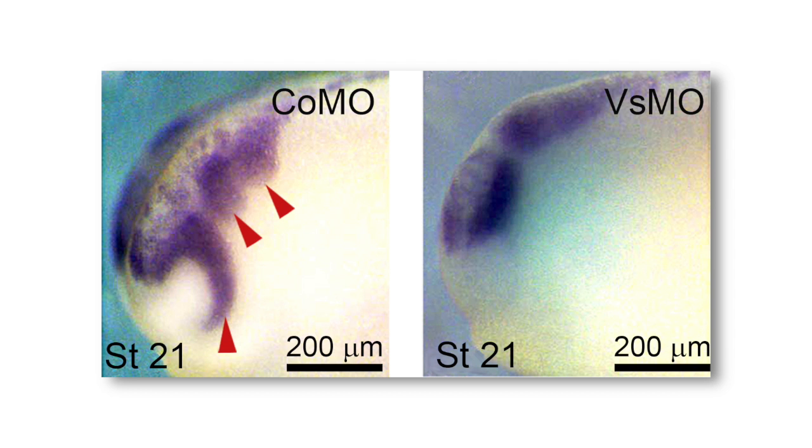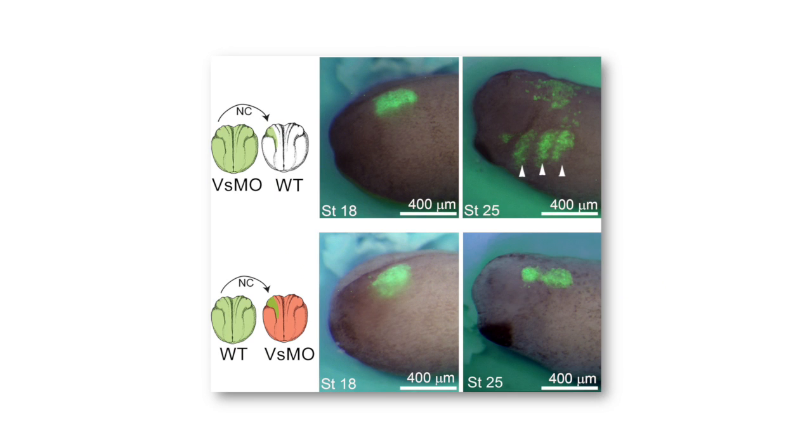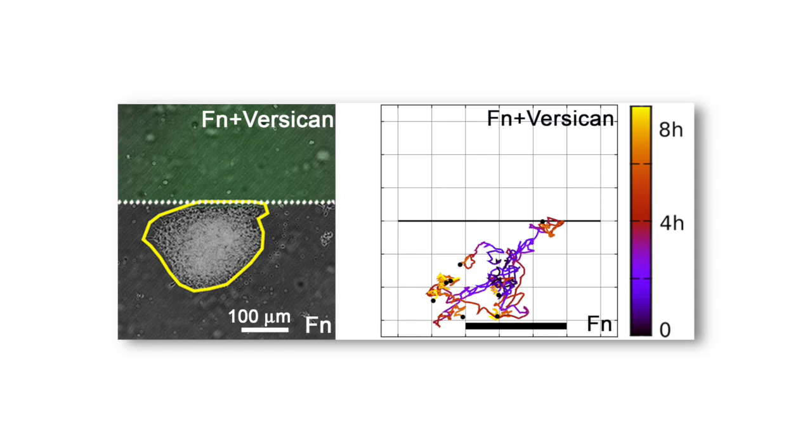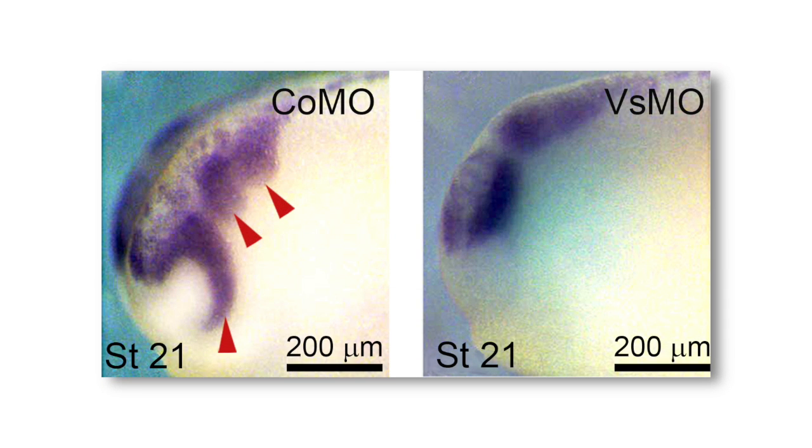Yet knocking down Versican in developing frog embryos impaired neural crest migration. A series of grafting experiments demonstrated that Versican is required in the tissues surrounding the neural crest cells rather than in the neural crest cells themselves. So if you add the molecule like in the in vitro experiment, you stop migration. But if you remove the molecule, you also stop migration. And this was consistent with the idea that confinement could be the explanation for the role of Versican.